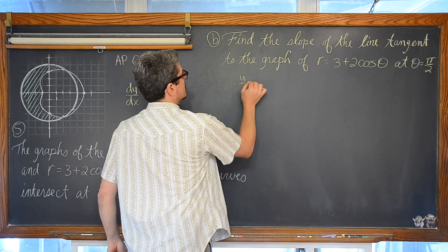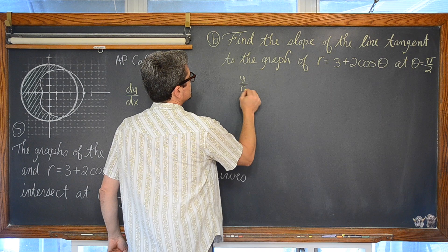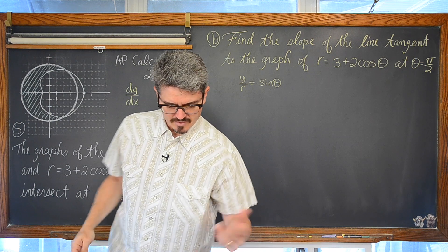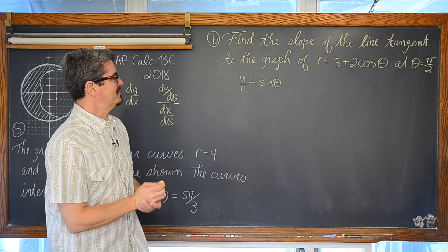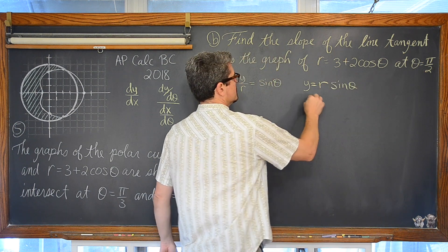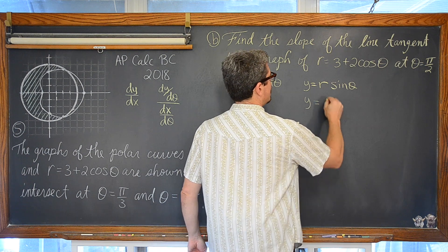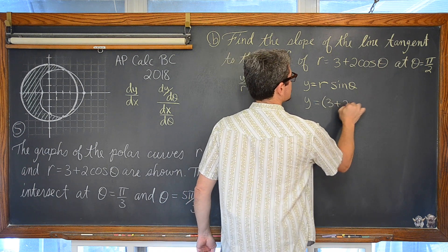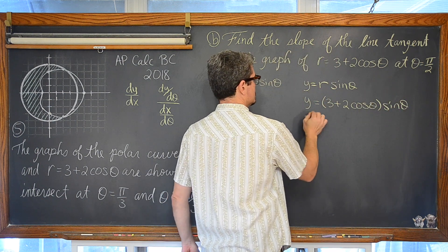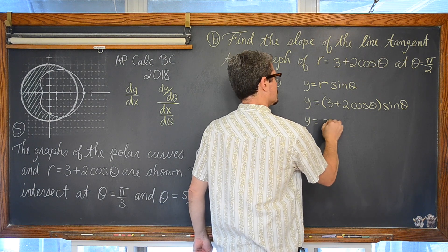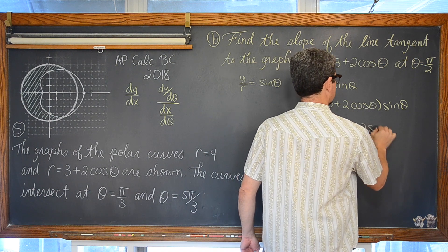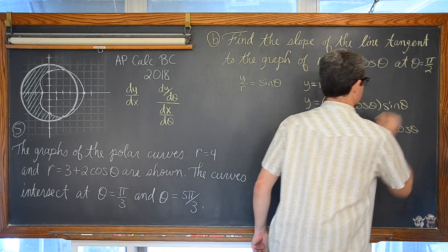We're going to remember that y over r is equal to sine of theta. Then we have that y equals r sine of theta. Y therefore is equal to r, which is 3 plus 2 cosine of theta, times sine of theta. So y equals 3 sine of theta plus 2 cosine of theta sine of theta.